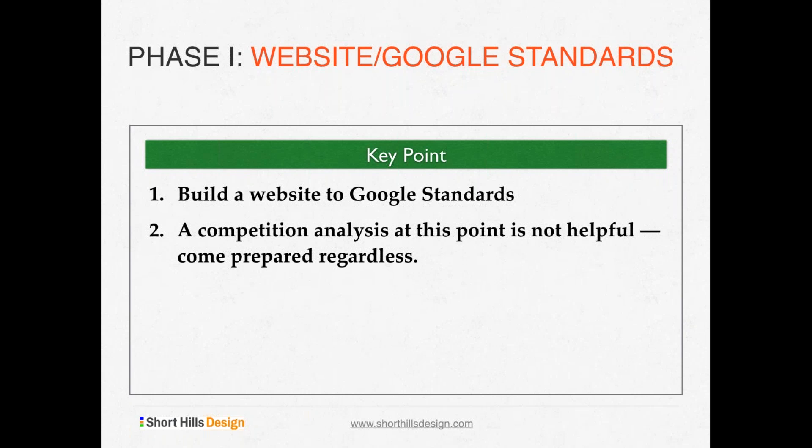Someone asked how you back up a Squarespace website. I don't know if there's a really good way to back up Squarespace. What I would recommend is at least copy and paste each page into a text editor or Word, so you at least have a copy of your content. I don't think you can go from Squarespace to WordPress directly, but that's a way to save your content. If that doesn't fully answer the question, ask another and we can come back to it.